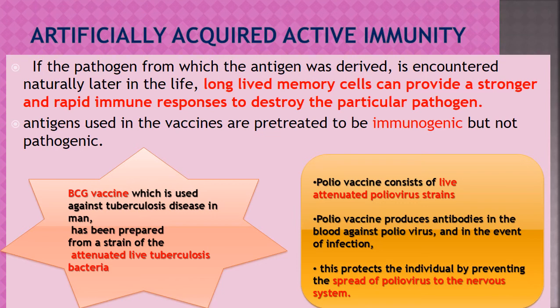If the pathogen from which the antigen was derived is encountered later in life, long-lived memory cells provide a stronger and rapid response to destroy it. The antigens used in vaccines are pre-treated to be immunogenic but not pathogenic — meaning they can stimulate immune responses but do not cause disease. Vaccines can contain weakened pathogens, killed microbes, their toxins, or one of their surface proteins.